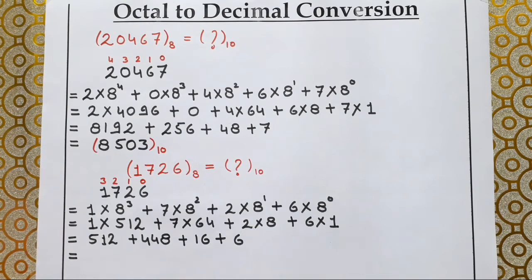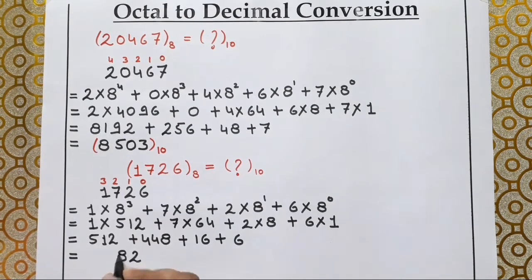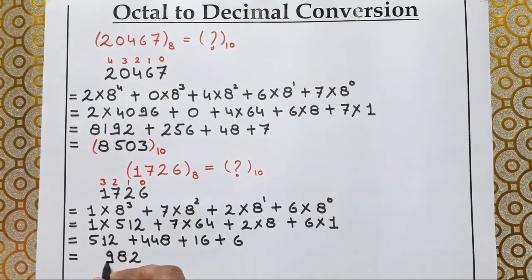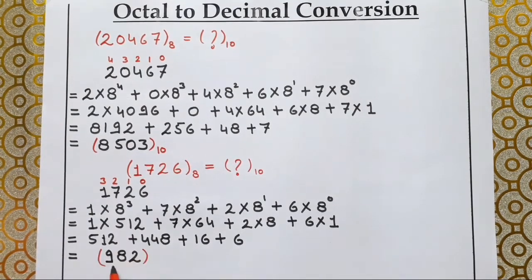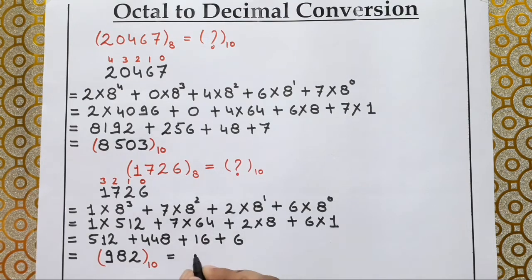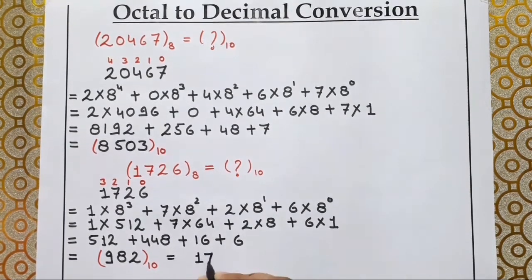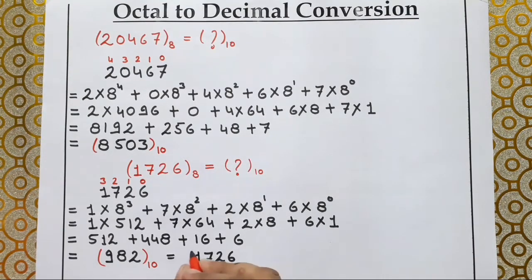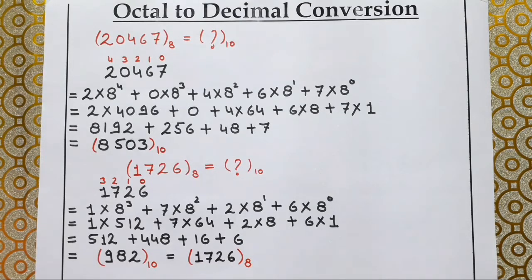Adding the values: 512 + 448 + 16 + 6 = 982. So 982 is our decimal number, which is equivalent to octal number 1726. Students, I hope today's video helped you understand decimal to octal conversion and octal to decimal conversion in the proper way. In the next video we will learn the next conversion. Please like this video, take care, and have a nice day.